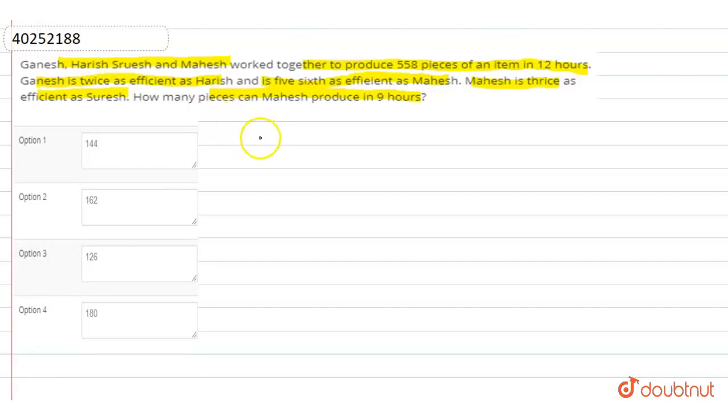Now, here is Ganesh, Harish, Suresh and Mahesh. These are all 12 hours of 558 pieces. Now, we can say that Ganesh is twice of Harish and 5/6 of Mahesh. Now we will convert all of them in the form of Mahesh. Because our question is how much does Mahesh produce?